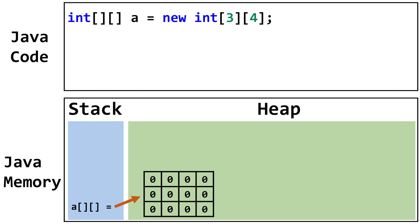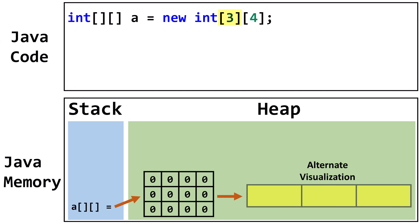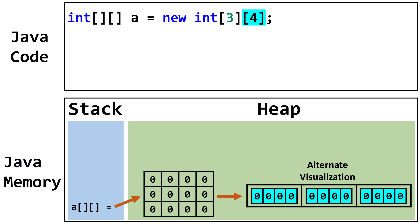The first number indicates the array will have three rows, while the second number indicates it will have four columns. This visualization is very useful for tracing, but it isn't the most accurate representation of the data structure. Let's look at alternative visualizations that will help us better understand how Java stores a 2D array in memory. The first number, in this case 3, creates a one-dimensional array of size 3. The second number, in this case 4, creates a one-dimensional array of size 4 inside each of the indexes of the first array. A two-dimensional array can be described as an array of arrays.